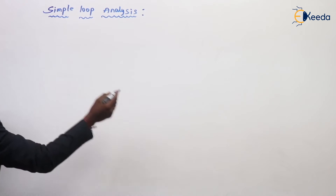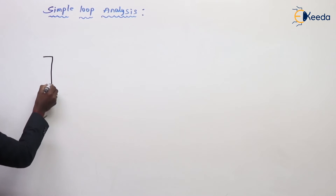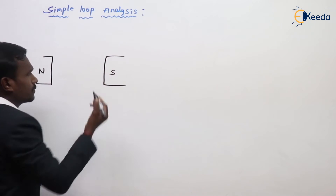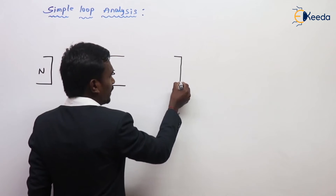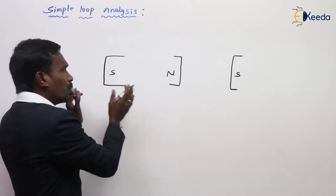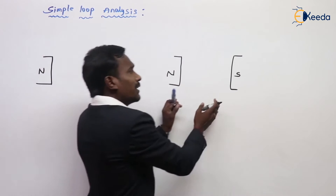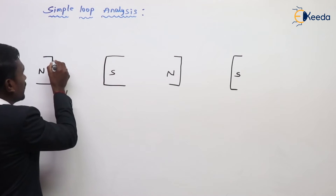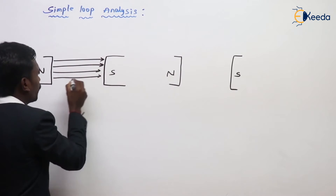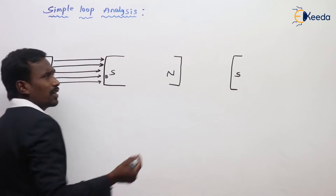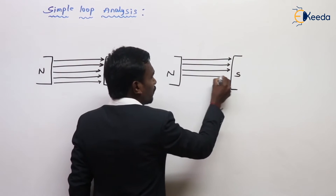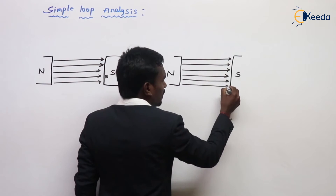For example, take here North Pole and South Pole. These are my two poles, for the first one 80 degrees and for the next one 80 degrees. This is my magnetic flux and flux density B. Here also the stationary DC magnetic field — that's why DC magnetic field — so stationary magnetic field like this.